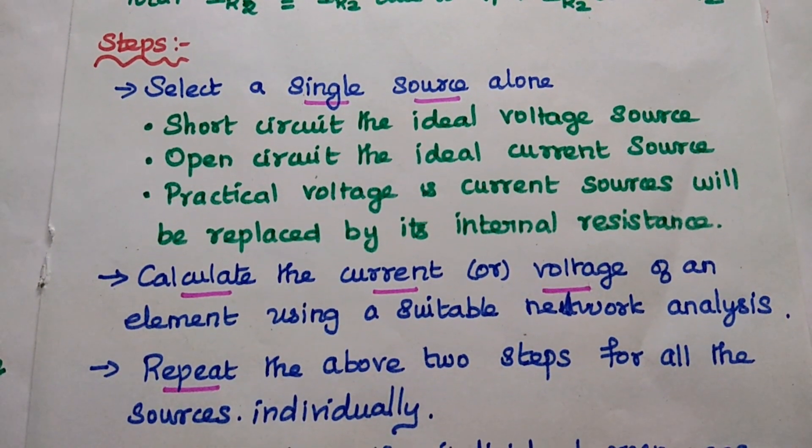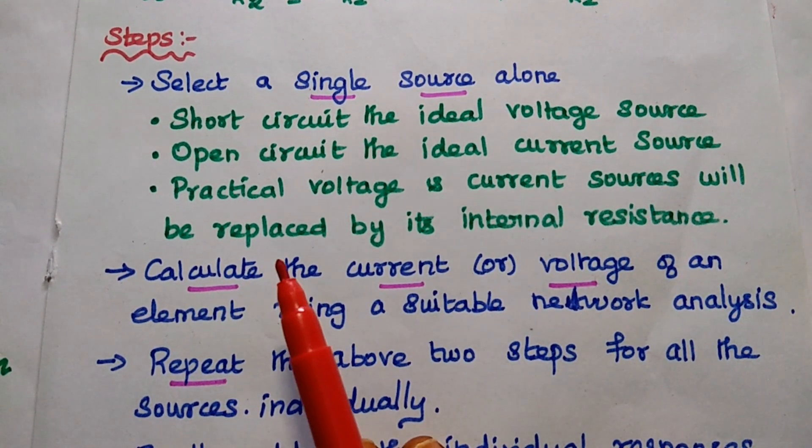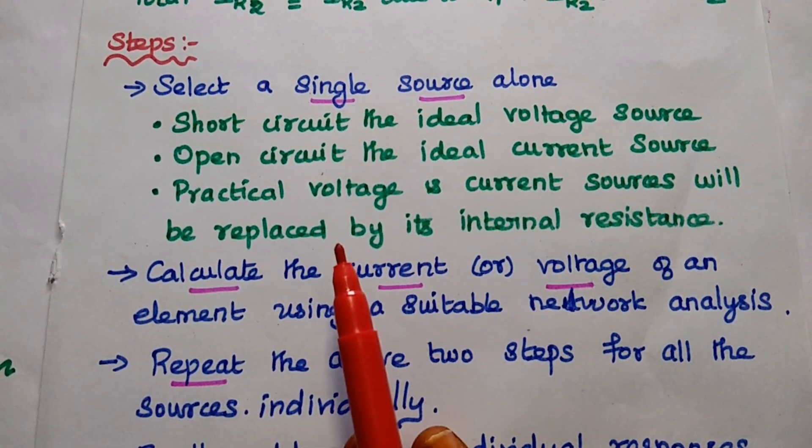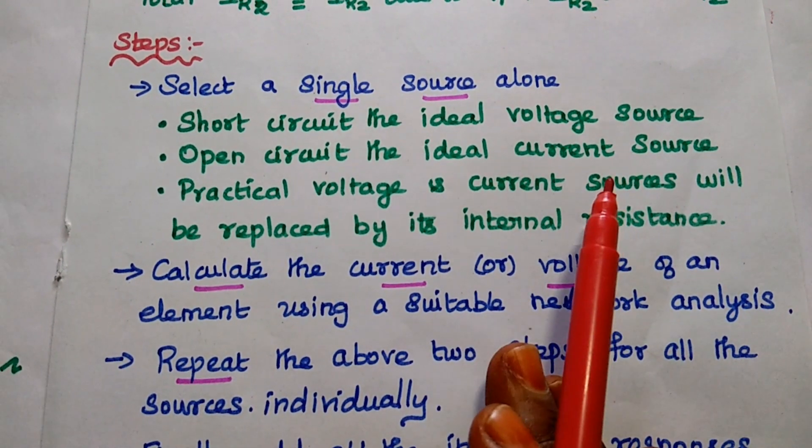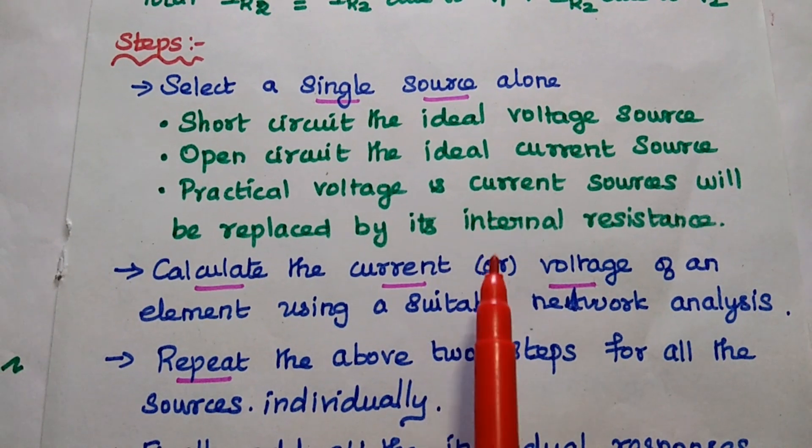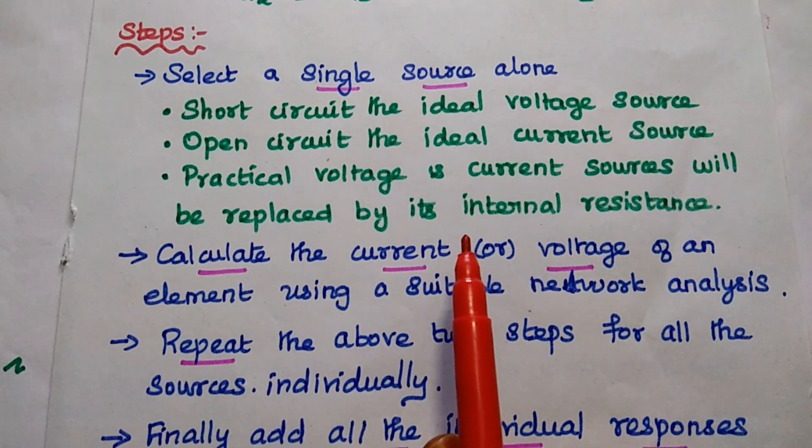So the first step is to select a single source alone. At the time, short-circuit the ideal voltage source and open-circuit the ideal current source. So we have to short-circuit the voltage source, open-circuit the ideal current source. We have to select only one source at a time.